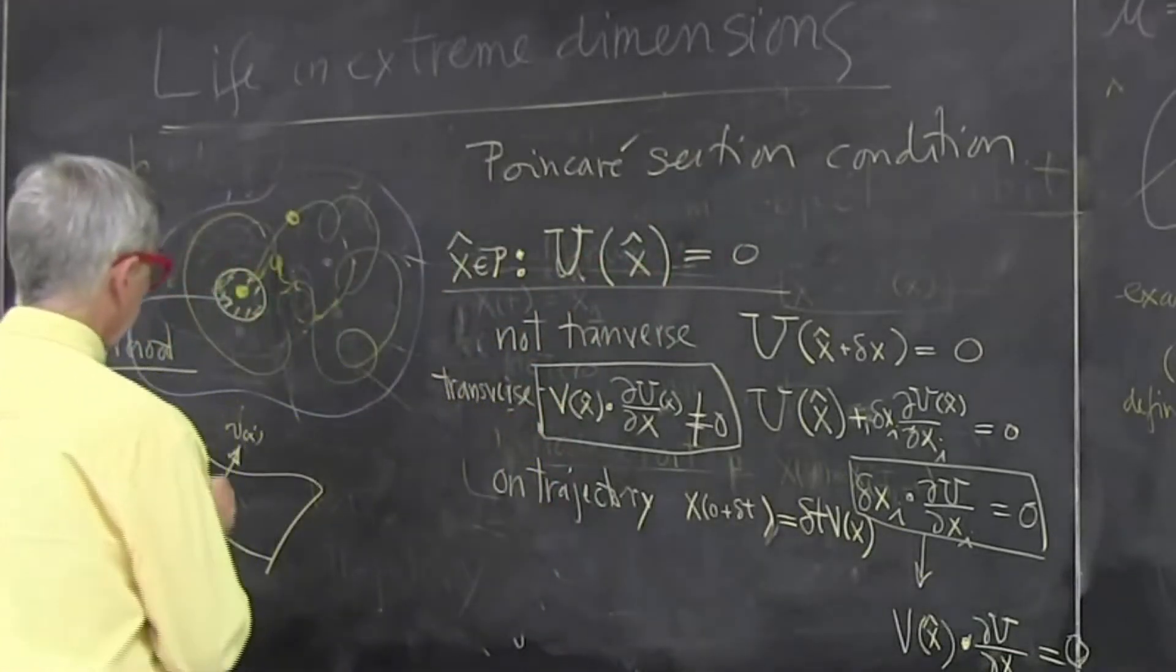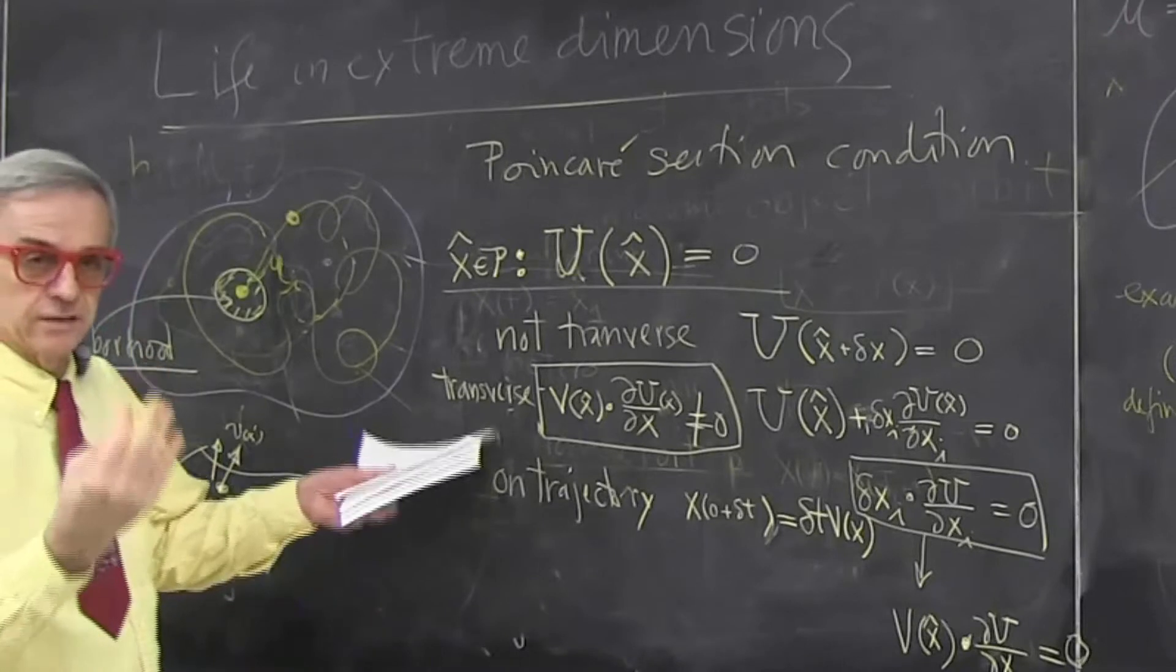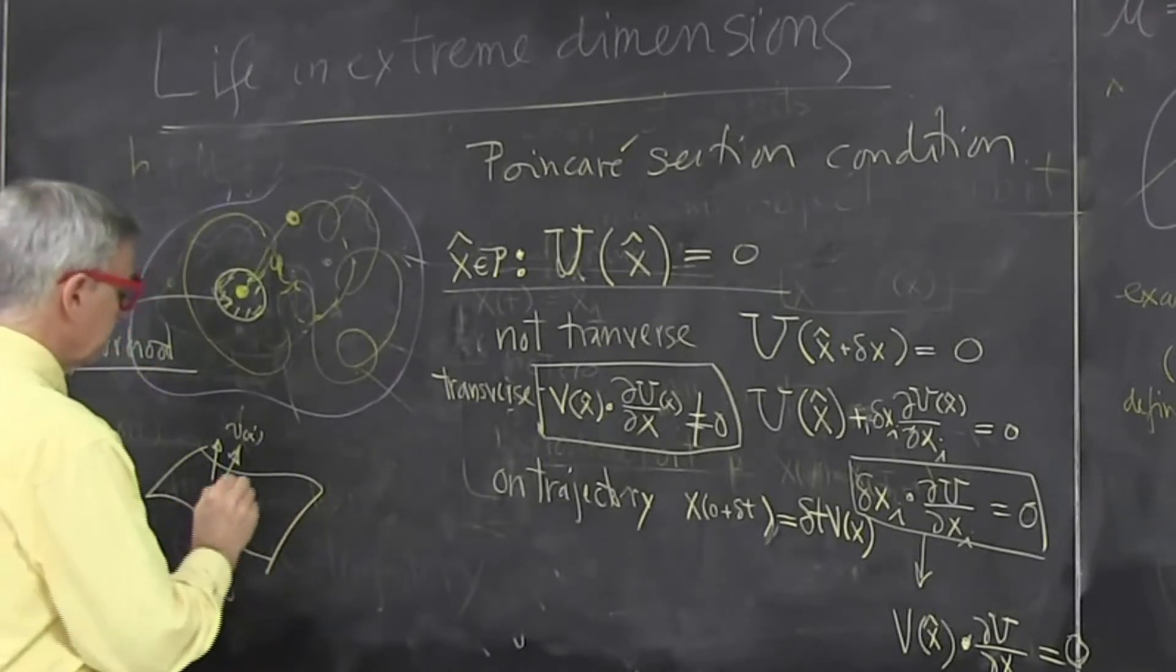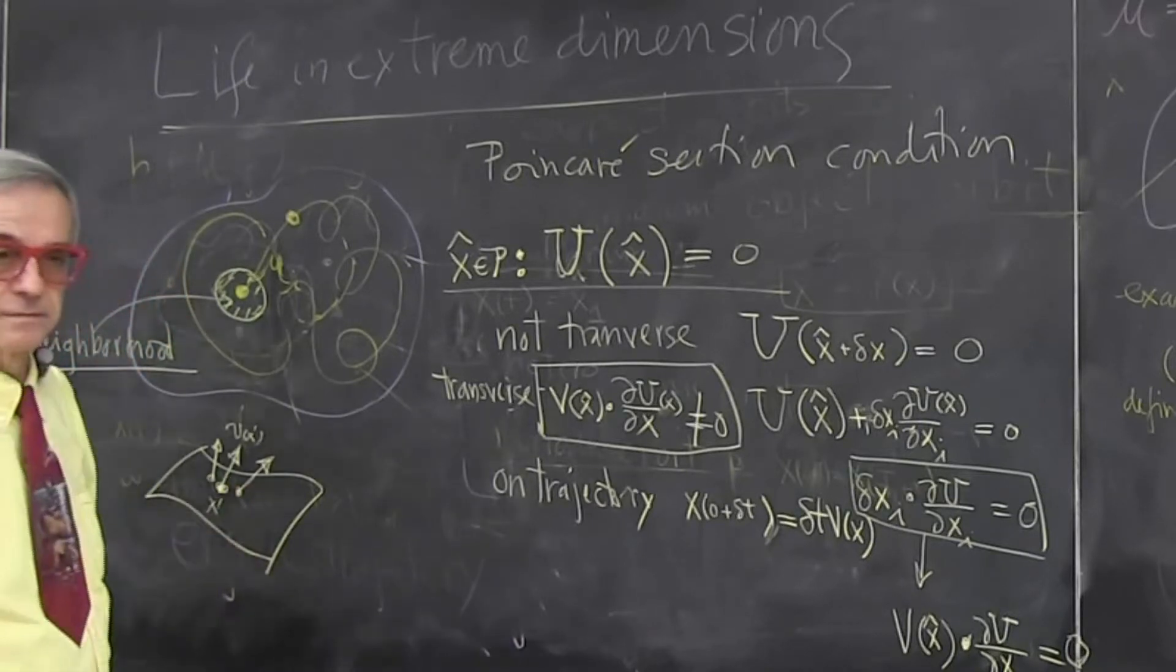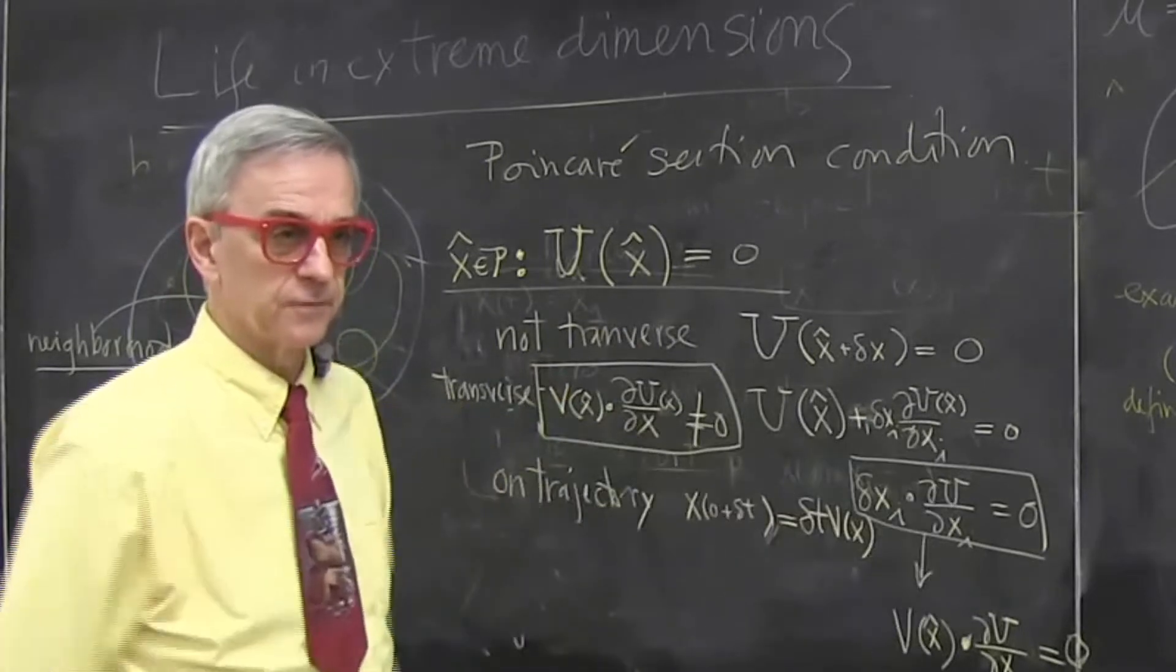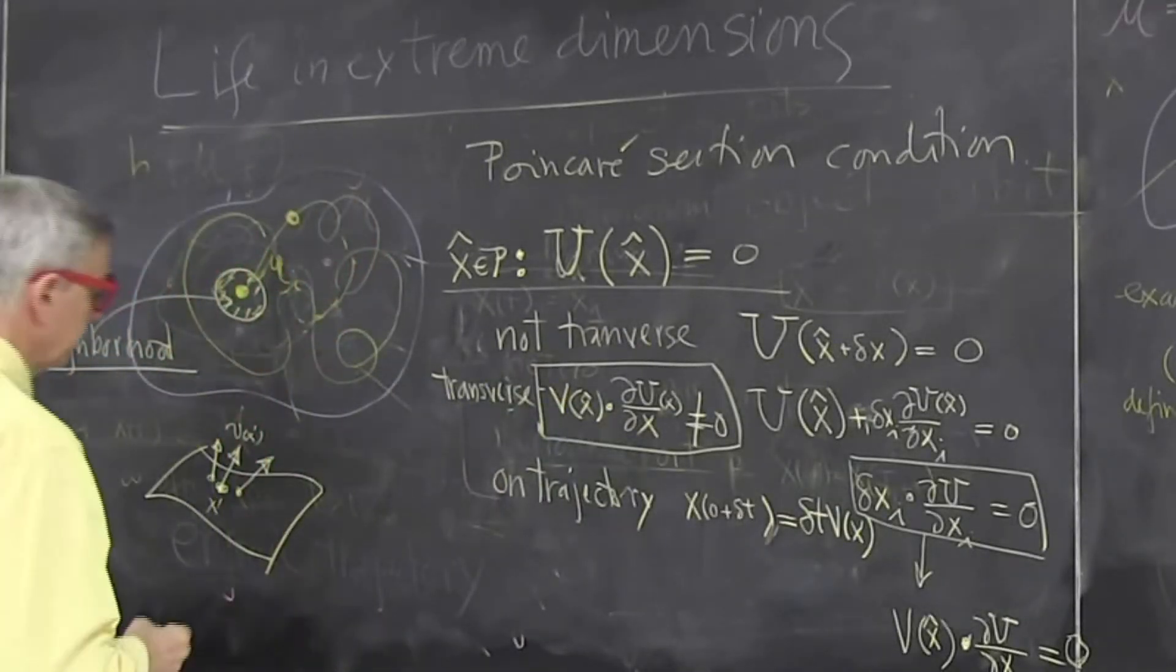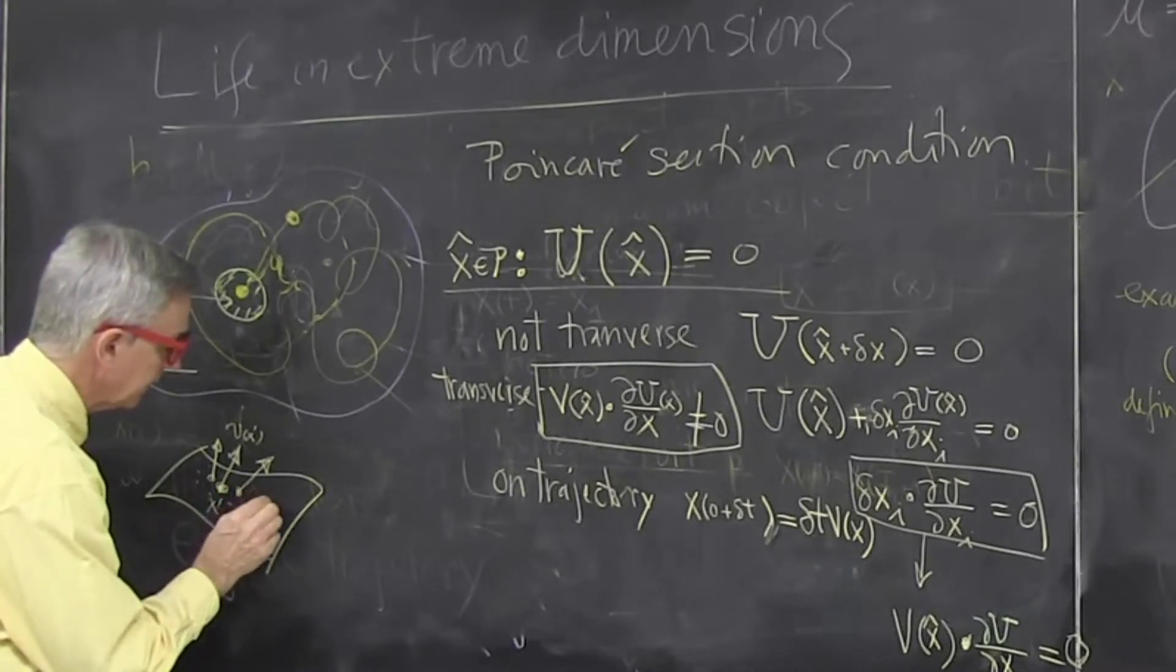Another condition comes from the notion of neighborhood. So I am in the Poincaré section, and I find that my velocity field v at x prime is pointing this way. Then I look to the left, and there is somebody going this way, but in my general direction.